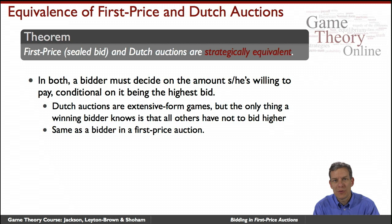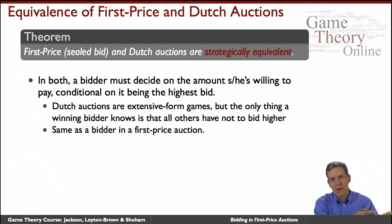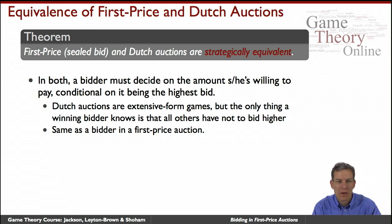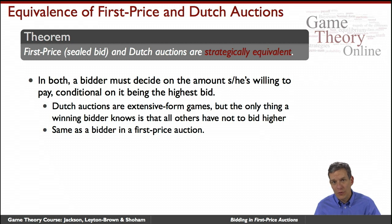In particular, there's a mapping between the strategies in these two games such that for an equilibrium in one, we find an equivalent equilibrium in the other. In both auctions, you have to make a decision on how much you're willing to bid, conditional on it being the highest bid, without knowing anything else about the other individuals' values.